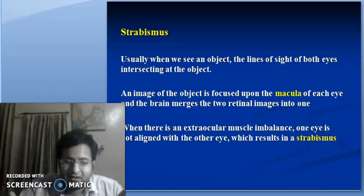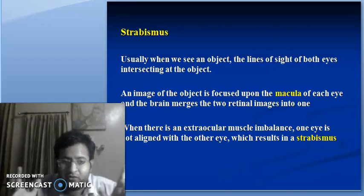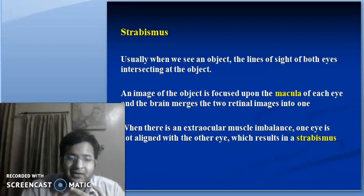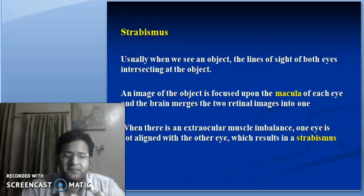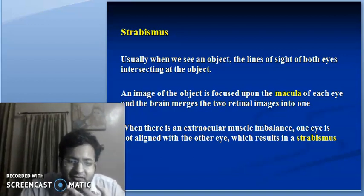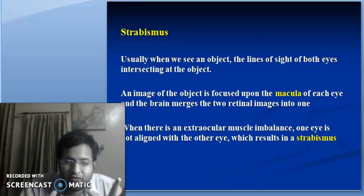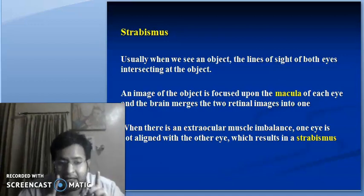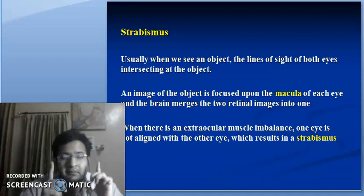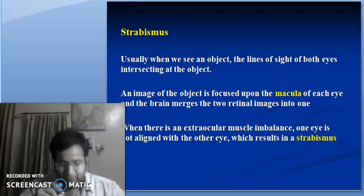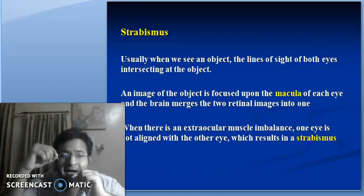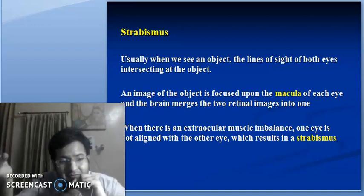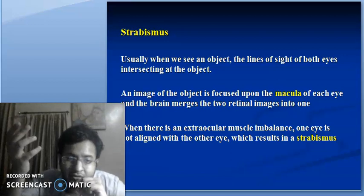Whenever there is an imbalance of the extraocular muscles — the superior rectus, inferior rectus, medial rectus, lateral rectus, superior obliques, and inferior obliques — especially in the primary position, one eye is not aligned to the visual axis of the other eye. This is known as strabismus, or in simple English, a squint.